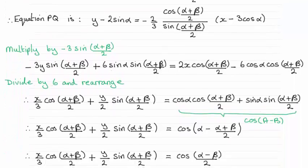So you can see then that what I did next was multiply both sides by minus 3 sin of alpha plus beta over 2, which was enough to get rid of this fraction here. And I got this then, and then divided by 6 on both sides and rearranged it to give me this.